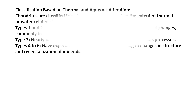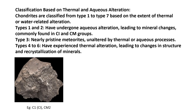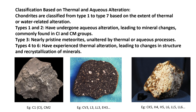Classification based on thermal and aqueous alteration: chondrites are classified from type 1 to type 7 based on the extent of thermal or water-related alteration. Types 1 and 2 have undergone aqueous alteration leading to mineral changes, commonly found in CI and CM groups. Type 3 are nearly pristine meteorites unaltered by thermal or aqueous processes. Types 4 to 6 have experienced thermal alteration leading to changes in structure and recrystallization of minerals.